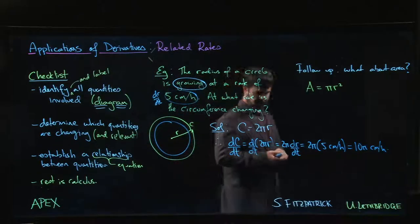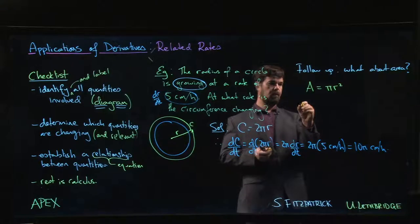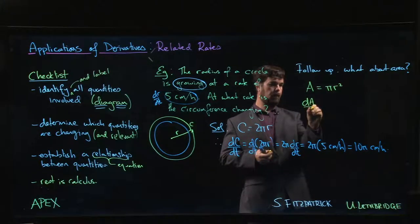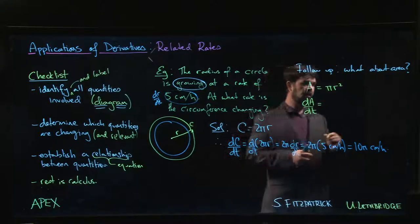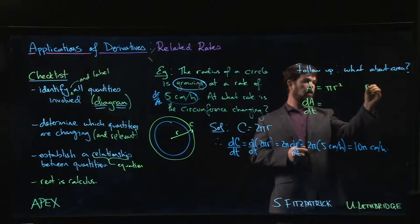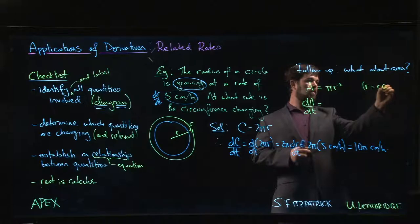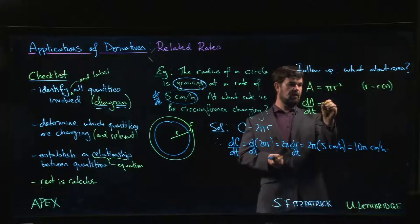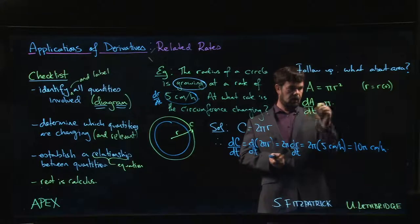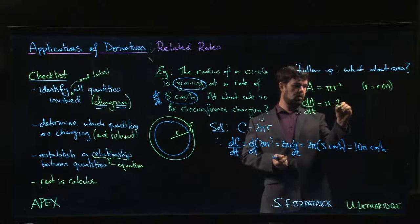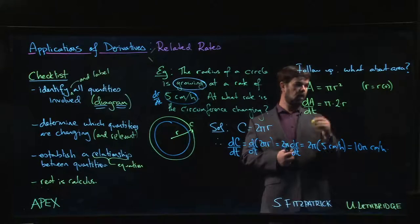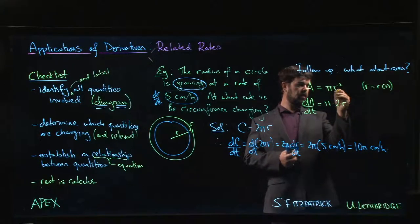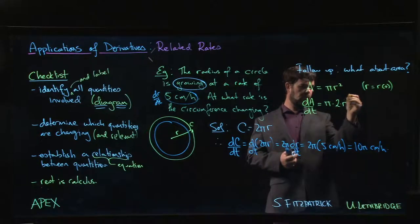Because when we take the derivative, remember we're thinking of this r here as a function of t. When we take the derivative of this function squared, power rule says we should do two times the function, then we need to multiply by the derivative of the inside, which is r of t, so we get r prime of t or dr/dt.